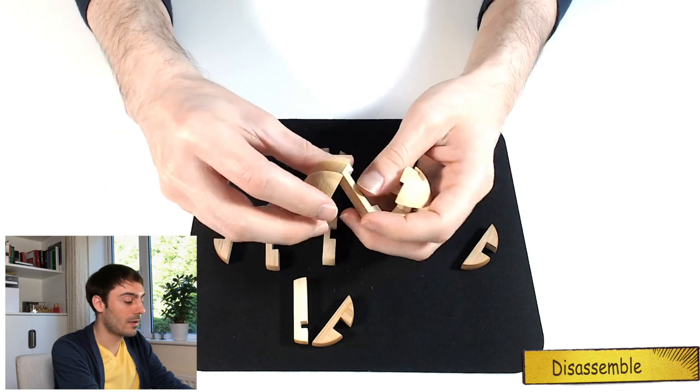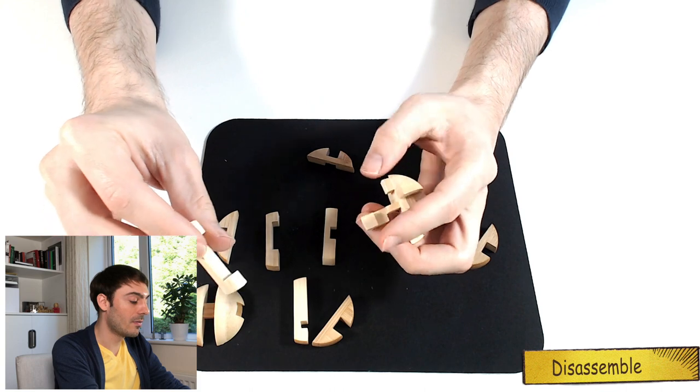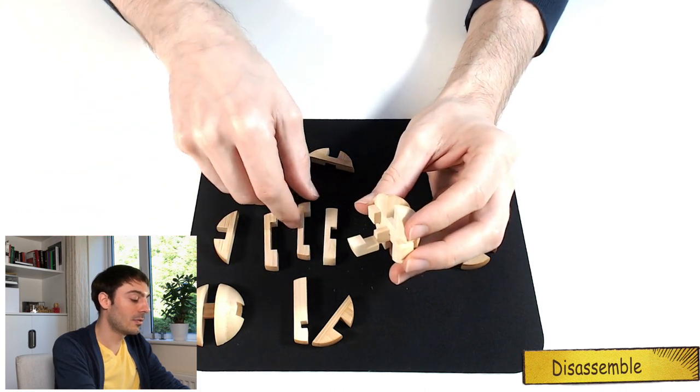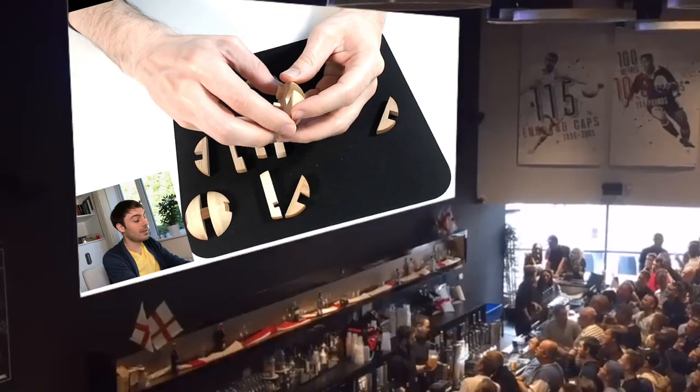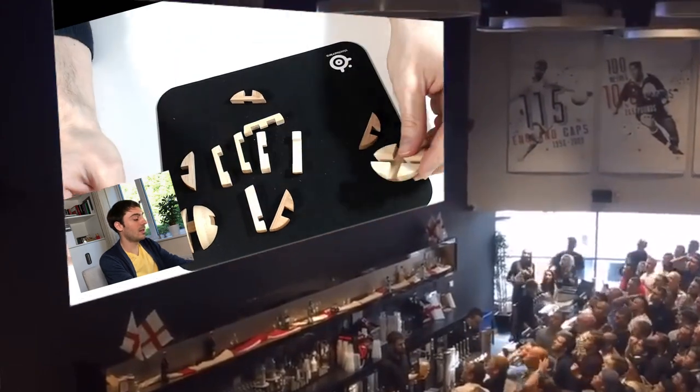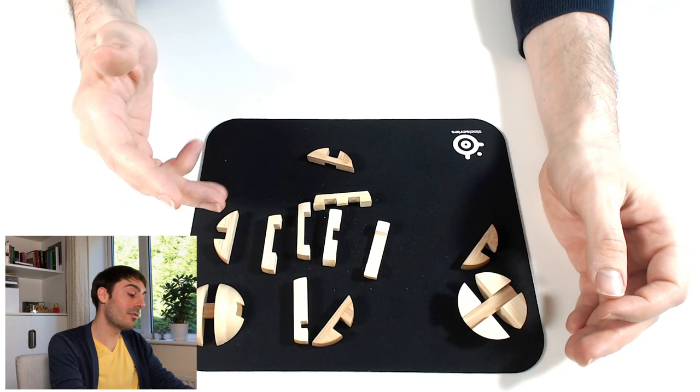So we have this cylinder part here. Another part that came from the middle. So it's this part that plays a key role actually because you can use them to lock everything. And then the last piece. So the disassemble step is done. So we removed everything.